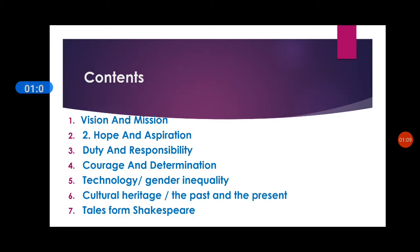The second unit is hope and aspiration. Under this heading, you are going to learn 'I Have a Dream', 'Glory and Hope', and 'I Dream a World', which is a poem. Then you are going to learn pronouns, relative pronouns, and articles.